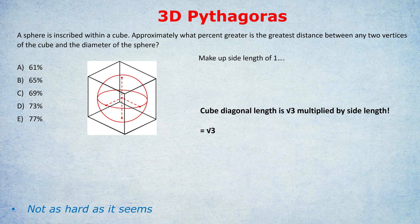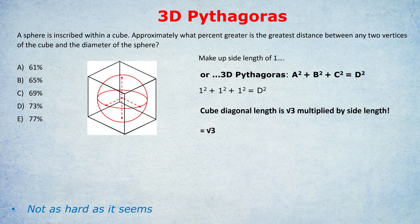But of course, I will also show you how you can use the formula I just showed you in the previous question. If the height, width, and length are all one, we can plug that into the formula. One squared plus one squared plus one squared equals d squared. So three equals d squared. And d is root three. So we get the same answer. That three-dimensional diagonal is root three. That's the greatest distance between any two vertices of the cube. Remember, vertices means corners.